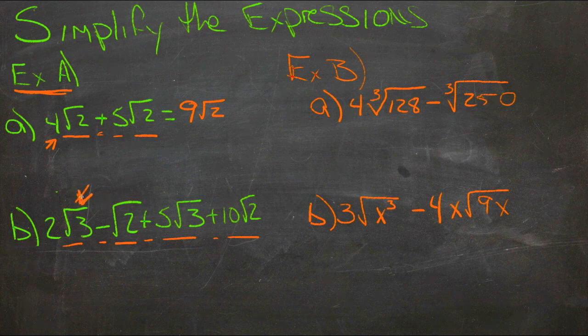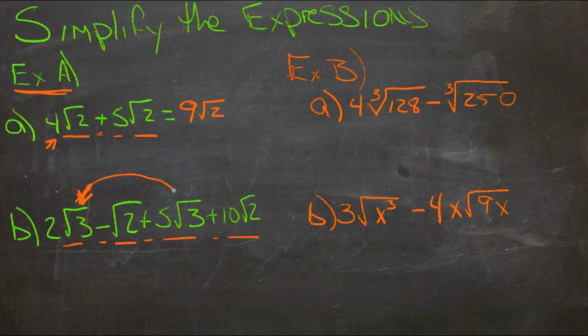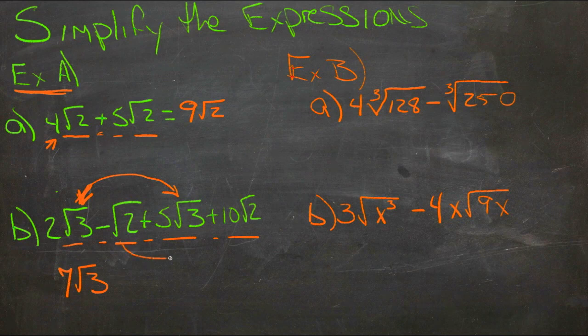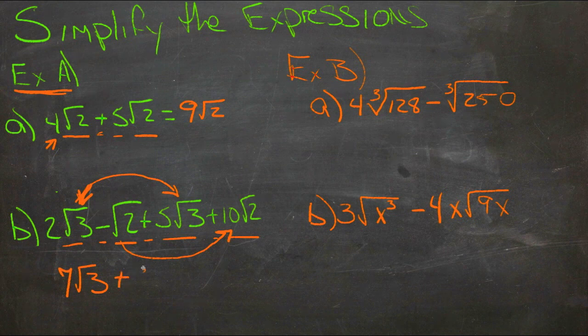That was a horrible arrow. Here and here. So we have 2 roots of 3 and 5 roots of 3, that's 7 roots of 3. And we have negative 1 root of 2, and 10 roots of 2, so that gives us 9 roots of 2.